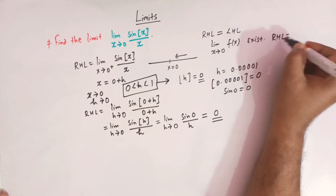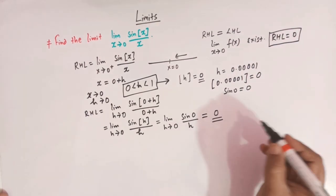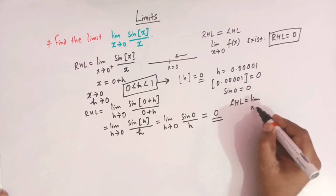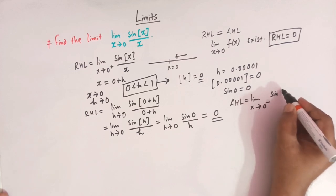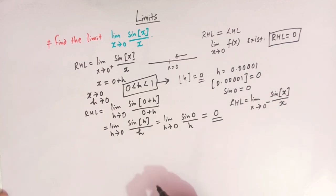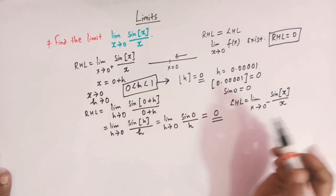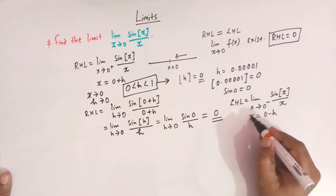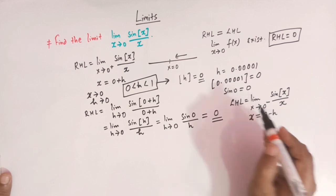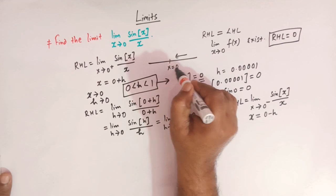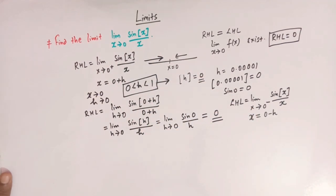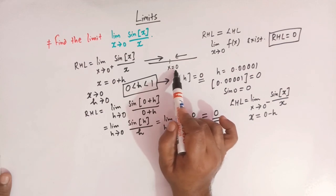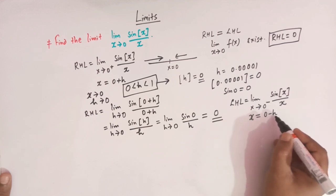The right hand limit is equal to 0. Now let us find out the left hand limit. The notation is limit x tends to 0 minus, and we have the function sine of greatest integer of x over x. We'll follow similar steps and take x is equal to 0 minus h. While finding out the left hand limit, we substitute 0 minus h because we are approaching towards x equals 0 from the left, and all values which lie towards the left of x equals 0 are less than 0.